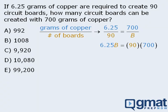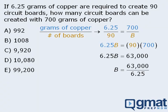So first we'll cross multiply to get this, then we'll simplify the right side, and then we'll divide both sides by 6.25.